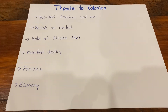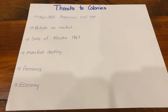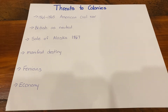Another threat would be manifest destiny. In the United States there was this idea that it was every citizen's manifest destiny to acquire land, to move west, to expand, to own property. And there was a lot of open, unprotected space in Canada. So manifest destiny was a legitimate threat to the colonies.